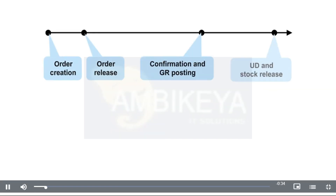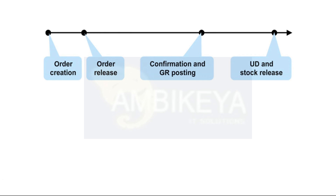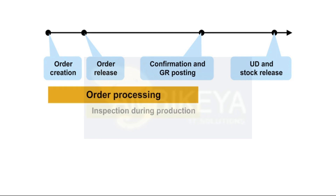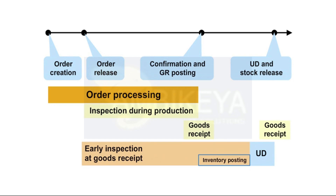When a production or process order is released, an Early Goods Receipt Inspection Lot — Inspection Lot Origin 04 — can be generated for this order. This inspection lot is created independently of whether an inspection lot with Origin 03 exists for the relevant order. The Early Inspection Lot at Goods Receipt represents a new combination for inspection lots.